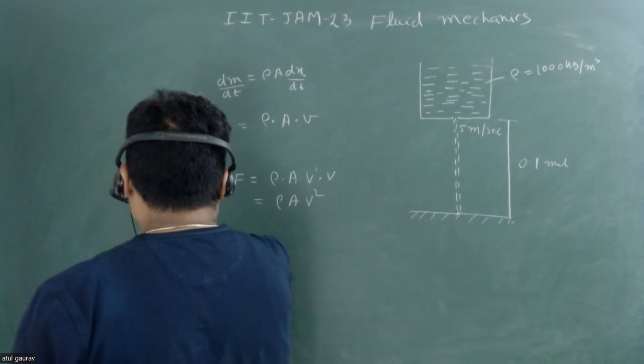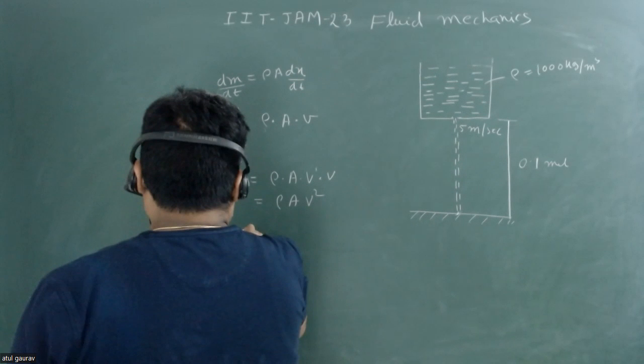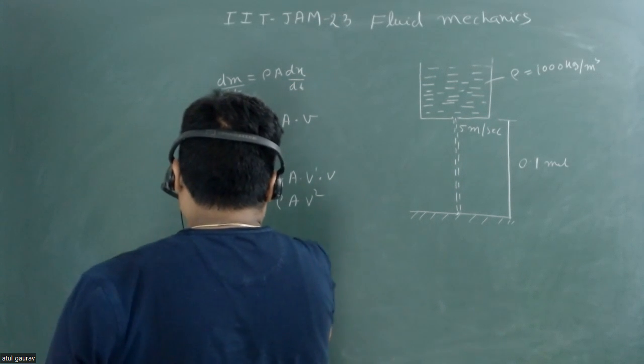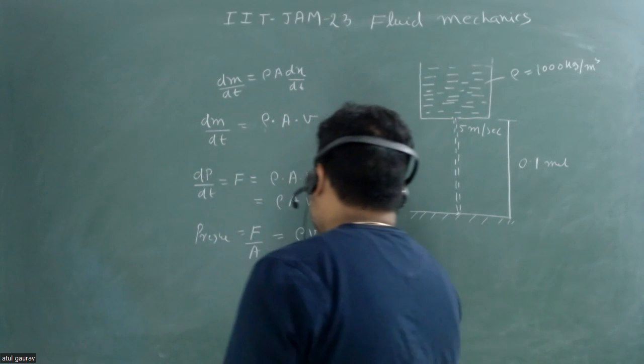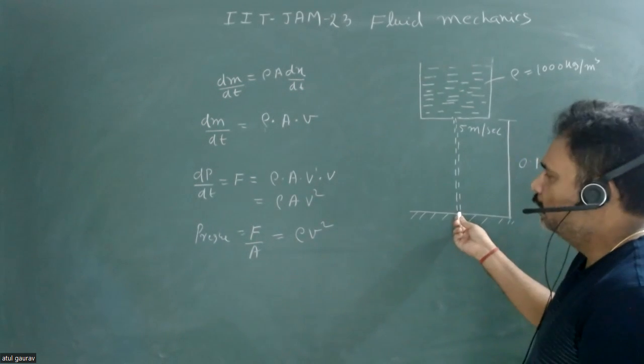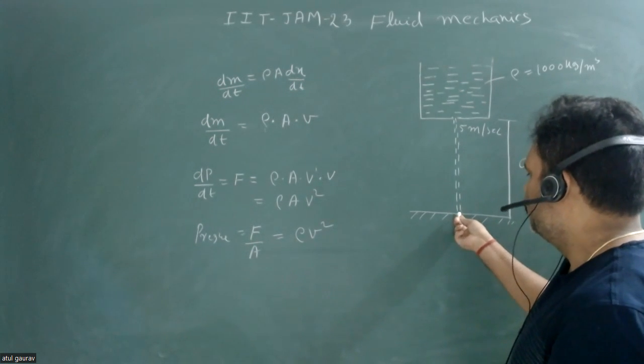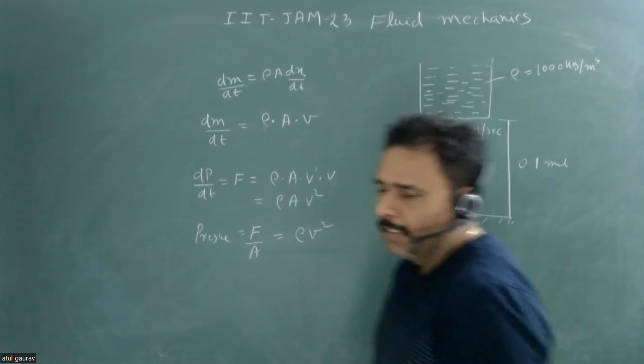We have to calculate pressure, and we know that pressure is force per unit area. So pressure equals force per unit area, and that value equals ρ into v². This v is the velocity of water at the point when it's just going to touch the surface.